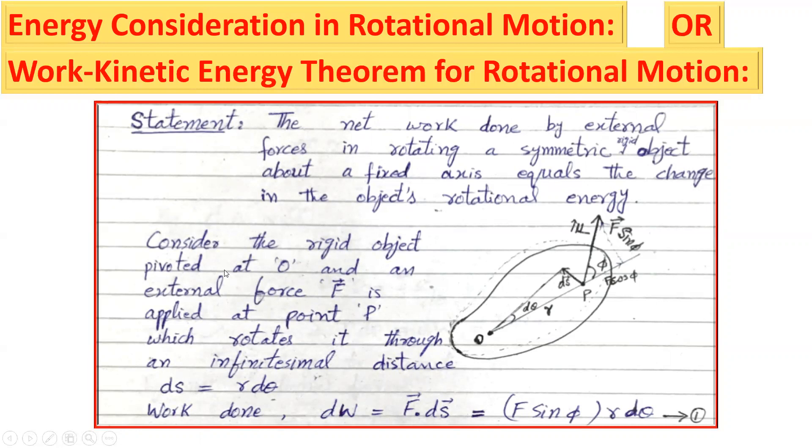Consider the rigid object pivoted at O, and an external force F is applied at point P which rotates it through an infinitesimal distance ds which is equal to r d theta. Work done, dW, is equal to F dot ds.